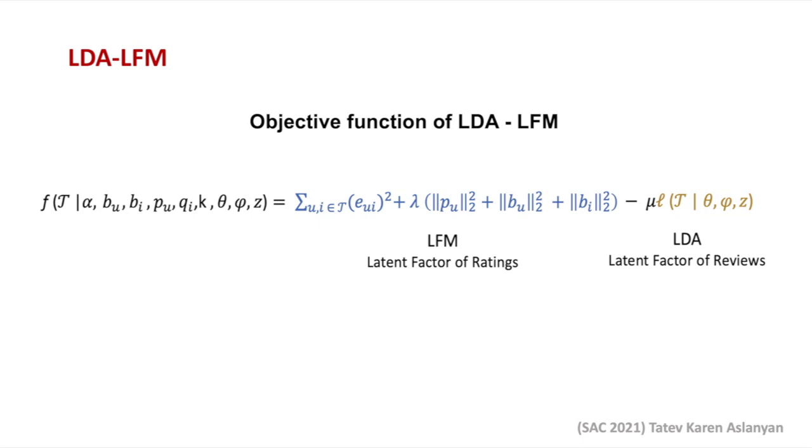To summarize, let us look at the objective function of the proposed model that needs to be optimized. The left part of the expression corresponds to the latent factor model, whereas the right part of the expression corresponds to the log likelihood of the corpus from LDA. So, we obviously make a trade-off between the importance of these two models, and the parameter mu is portraying this trade-off.